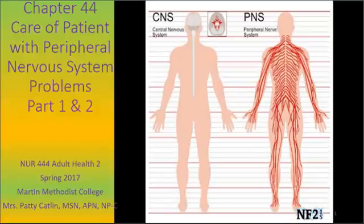Starting at around objective number 4: focus neurological assessment and findings in a patient with peripheral nervous system disorders. We're going to cover multiple sclerosis, Guillain-Barré, Myasthenia Gravis, and peripheral nerve disorders or trauma.